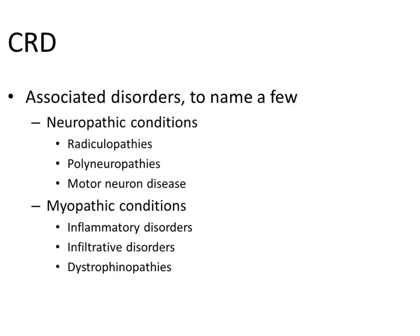Some associated disorders, to name a few: neuropathic conditions could include radiculopathies, polyneuropathies, or motor neuron disease. Myopathic conditions include inflammatory disorders and infiltrative disorders such as sarcoidosis or dystrophinopathies. Myopathic conditions are thought to be more common with CRDs than neuropathic conditions.